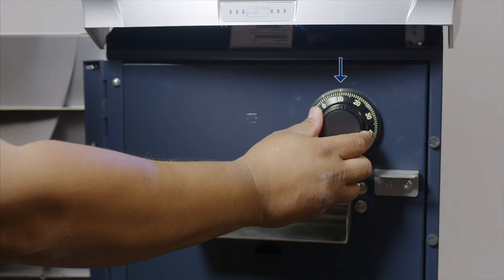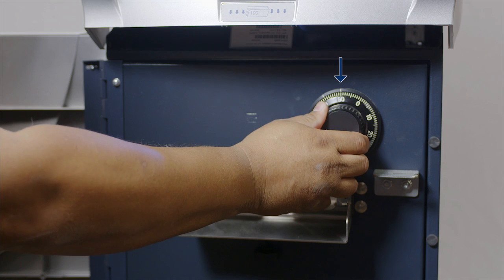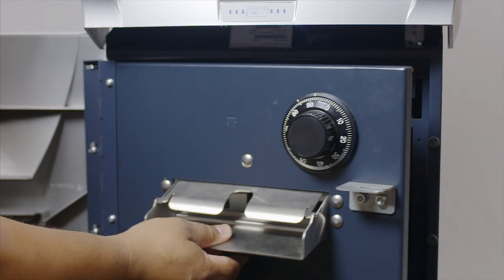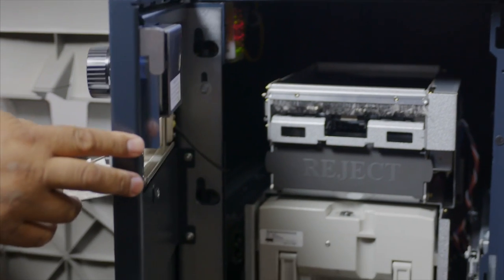Turn it clockwise until you get to 90. This should retract your deadbolt. Lift the T-handle under the bill tray and that should open up the door.